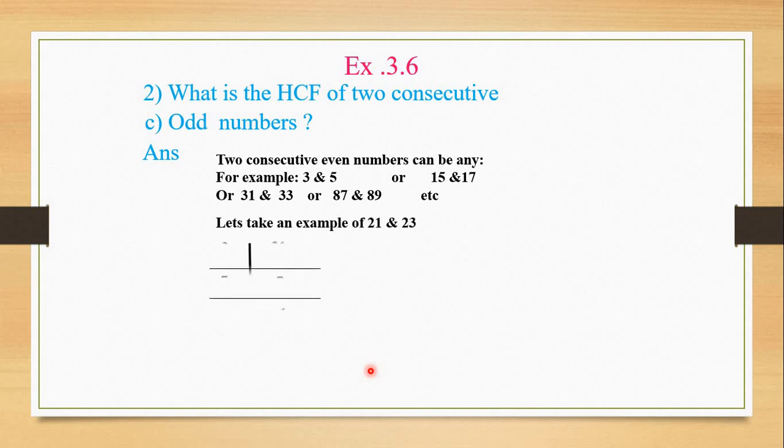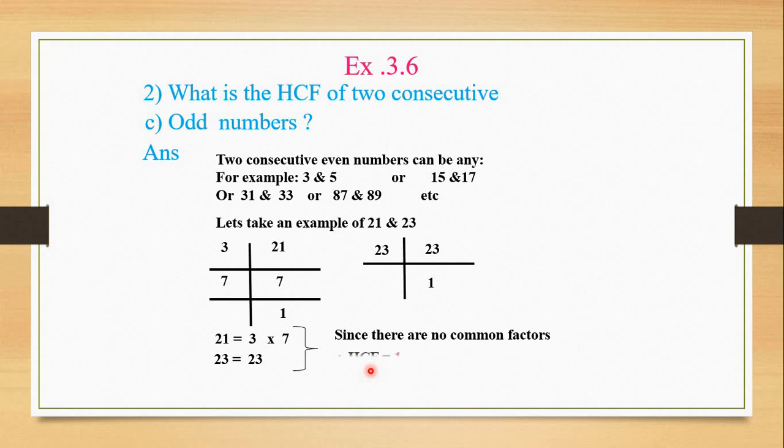Let's take an example of 21 and 23. For 21: 3 × 7 and 7 × 1. Now 23: 23 is a prime number and is divisible only by itself and by one, so 23 × 1. We'll list both factors. 21 is 3 and 7, and 23 is 23. If we look at both, nothing is common. Since there are no common factors, the highest common factor will be 1, not 0.